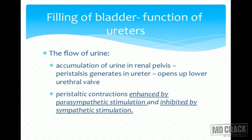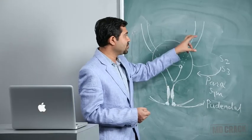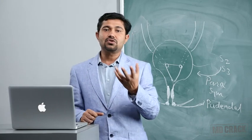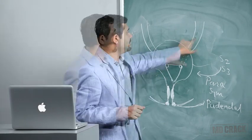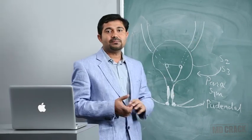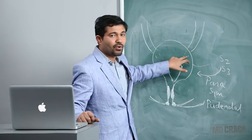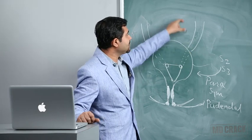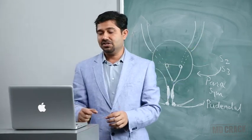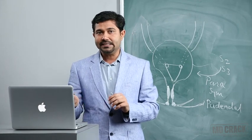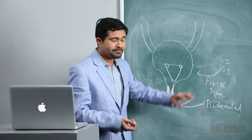Peristalsis of the ureter is enhanced by the parasympathetic system, whereas sympathetic stimulation decreases peristalsis. If there is a blockage in the ureter due to a stone, the parasympathetic system tries to constrict more strongly to expel the stone, while sympathetic stimulation tries to inhibit this constriction.